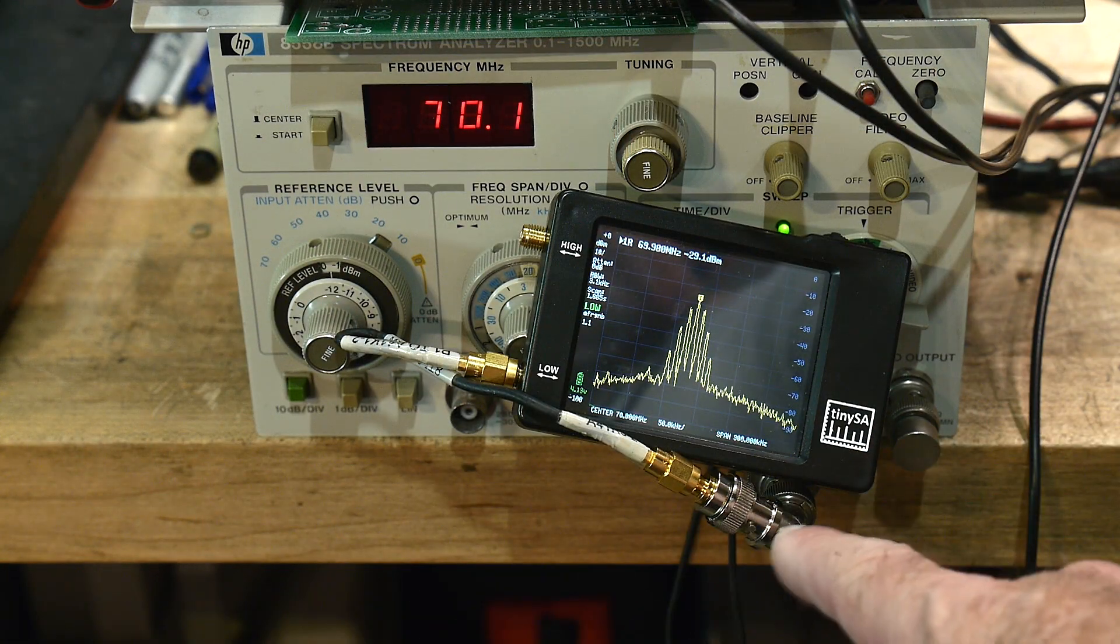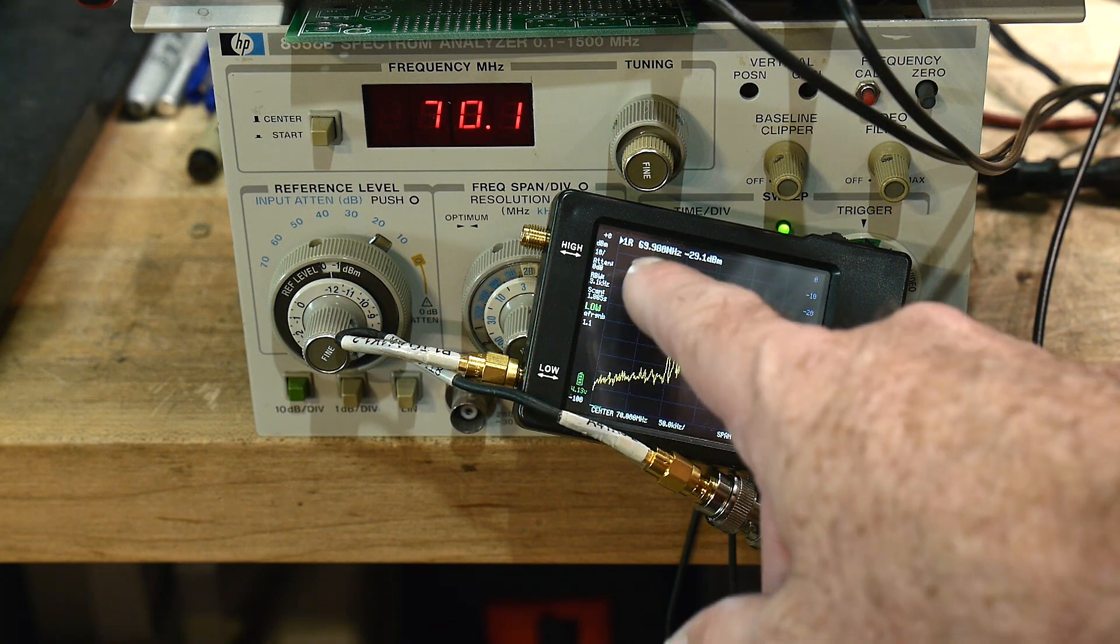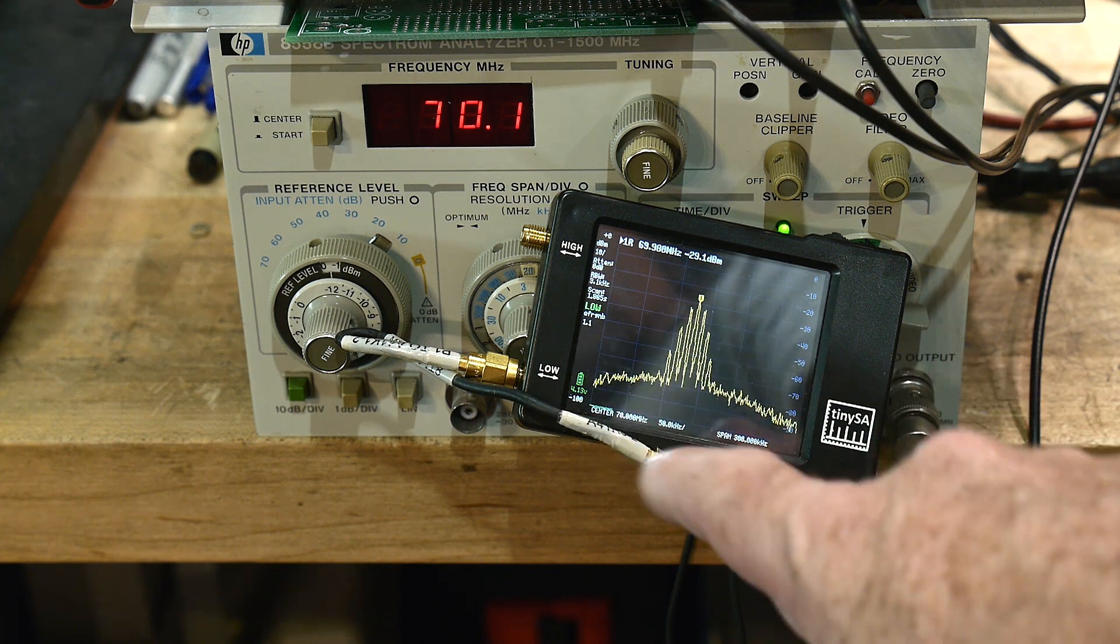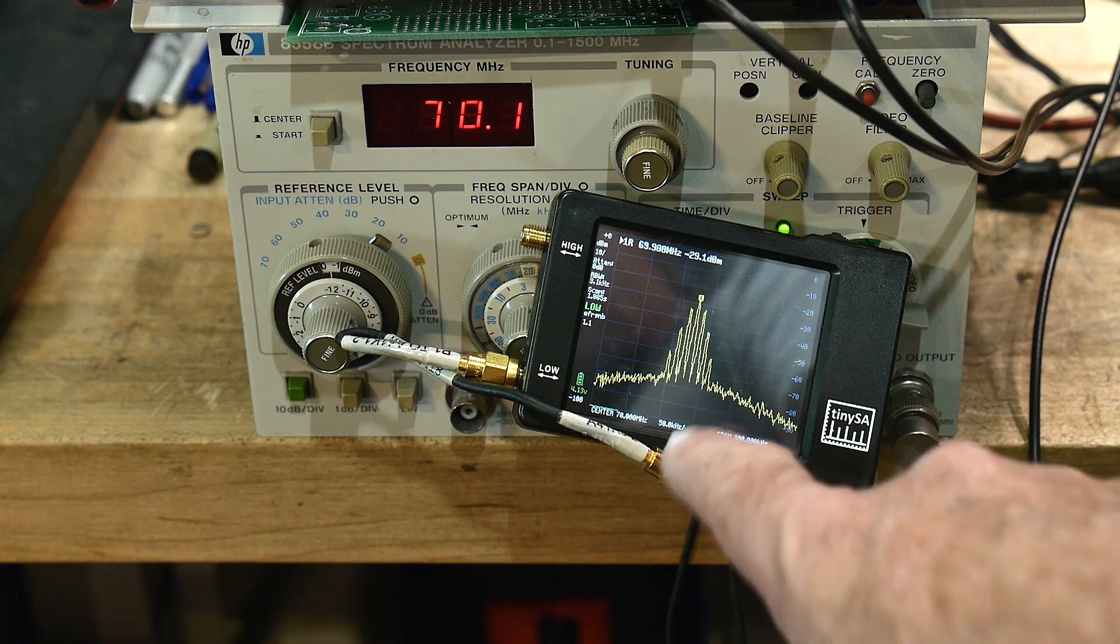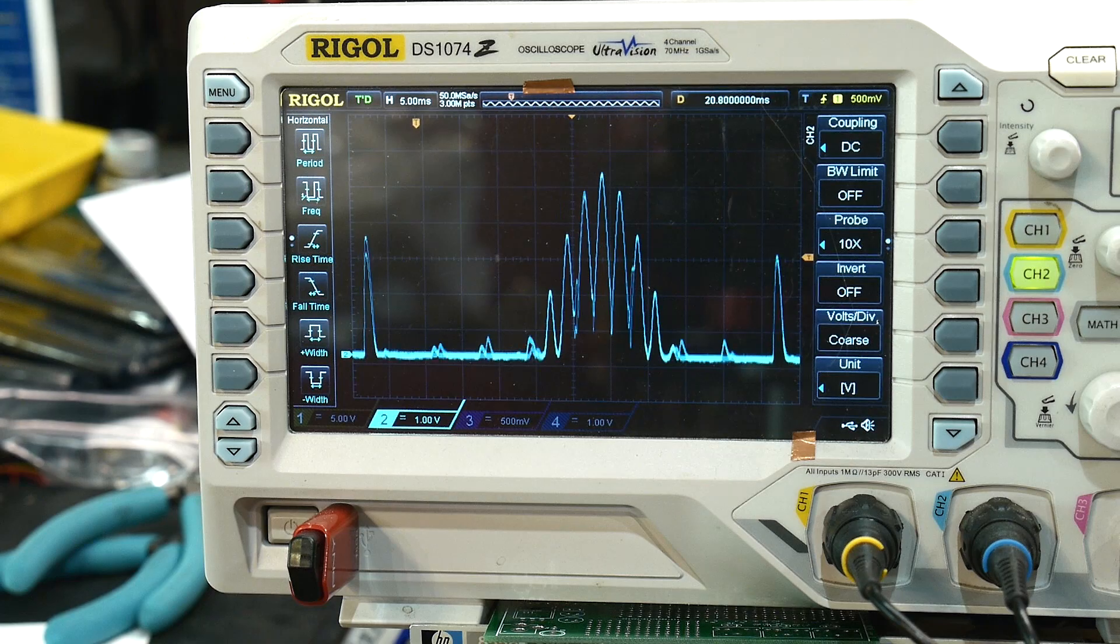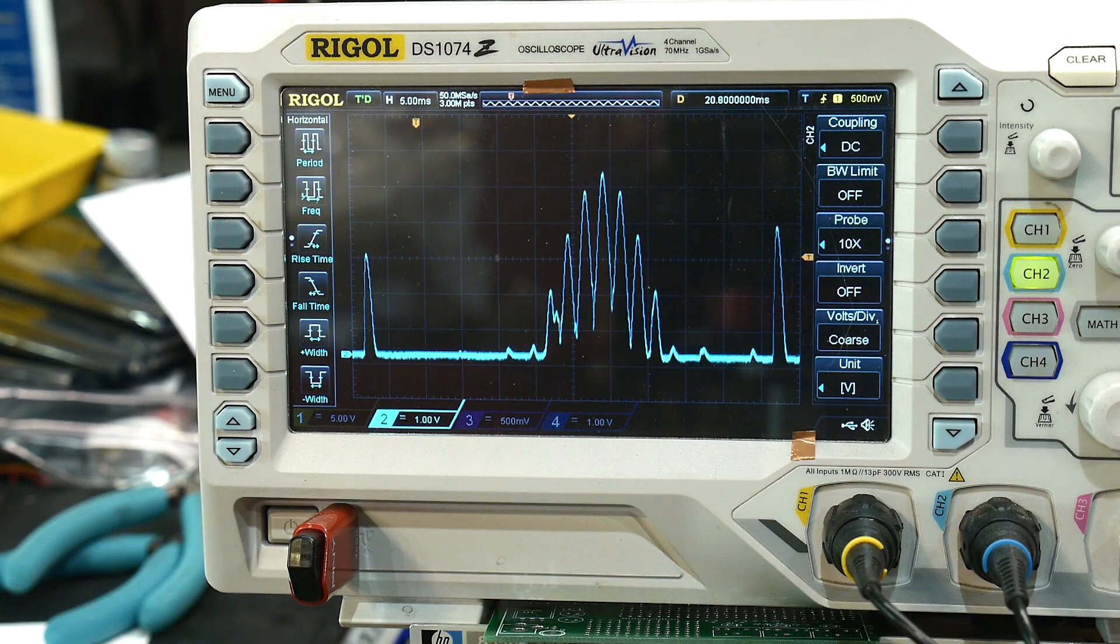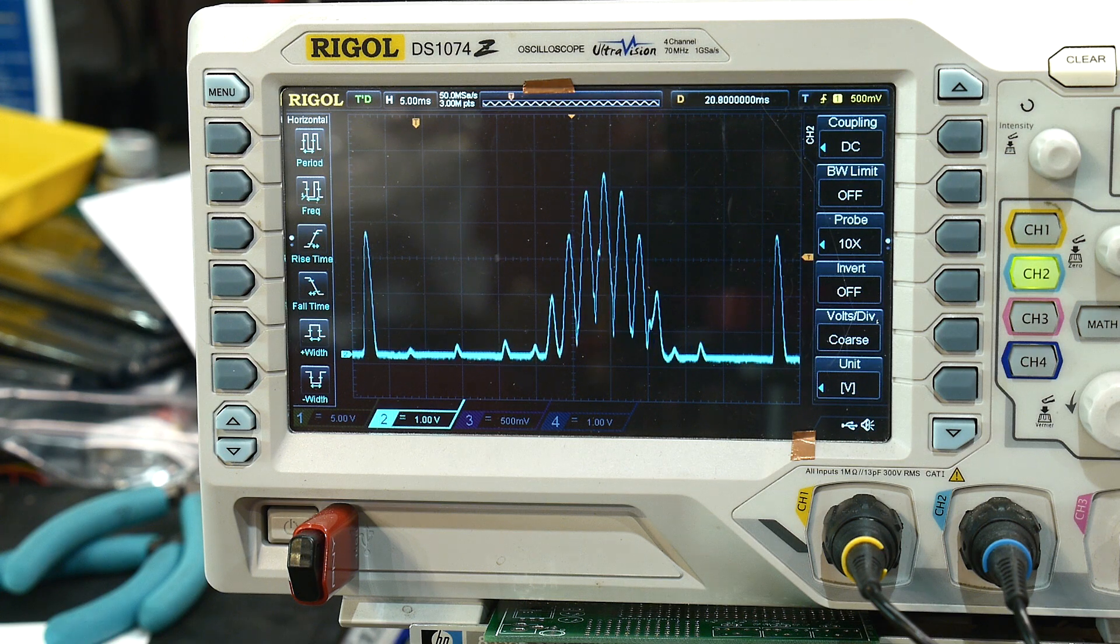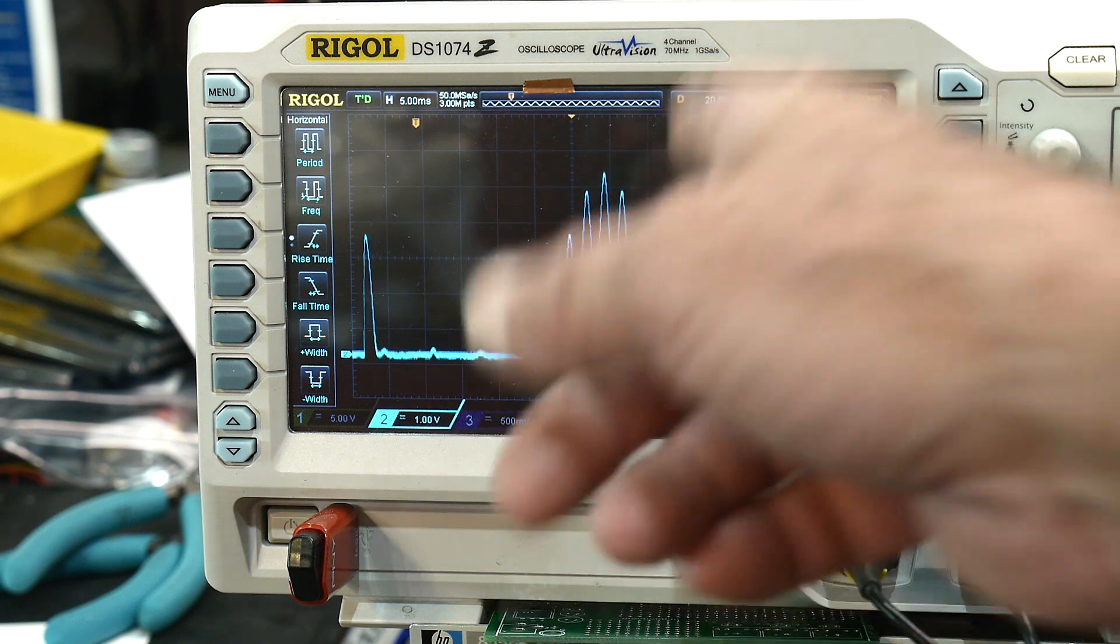So instead of using the splitter I've just gone ahead and put a T connector in here so I have one end of the T going to the TinySA and it looks the same and then the other one is going to the other analyzer and you can see there's a whole bunch of noise in here that's being output from the TinySA and getting into this one.